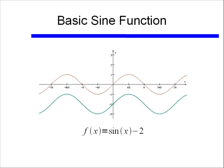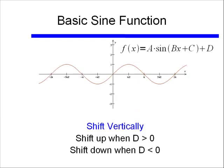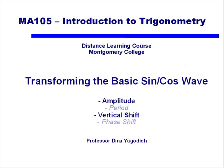It shouldn't be a surprise that sine x minus 2 shifts the function down by 2 units. In summary, d shifts the function vertically. It shifts up when d is greater than 0, and shifts down when d is less than 0. We've now talked about transforming the basic sine wave, specifically about amplitude and vertical shift.